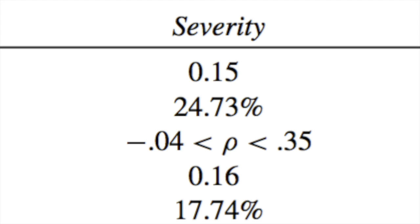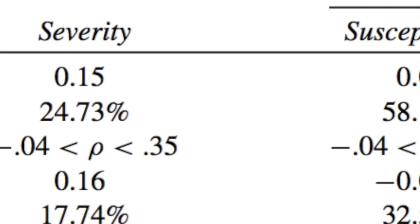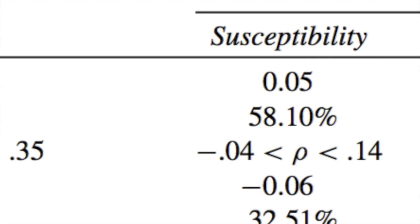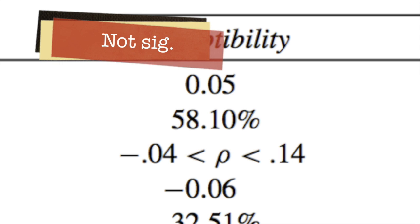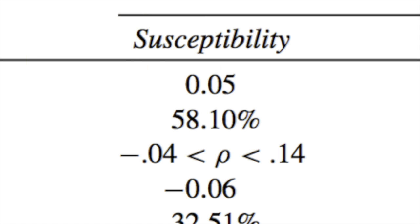Because the credibility interval crosses zero, you'd say perceived severity is not a significant predictor of someone's behaviour in the long run. Moving across to perceived susceptibility, this is a very small correlation of 0.05. Again, because the credibility interval crosses zero it's not significant, and there's a chance there's actually a negative association between perceived susceptibility and someone's behaviour.